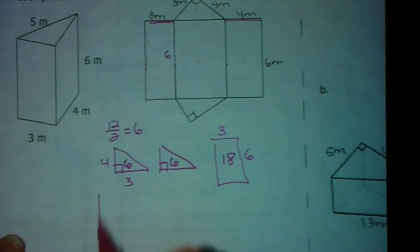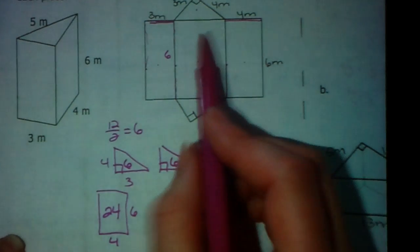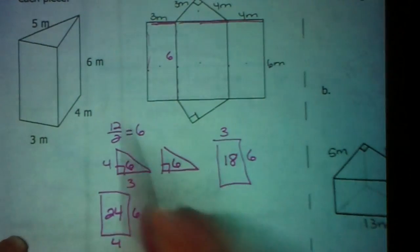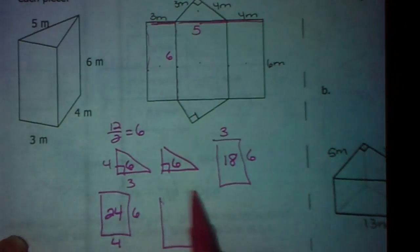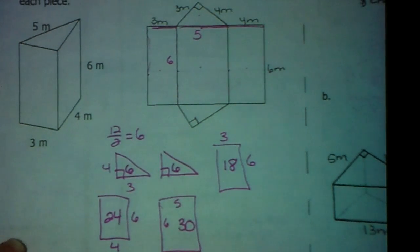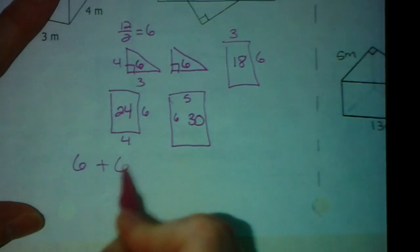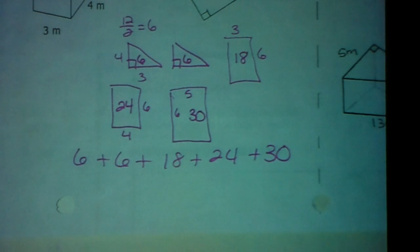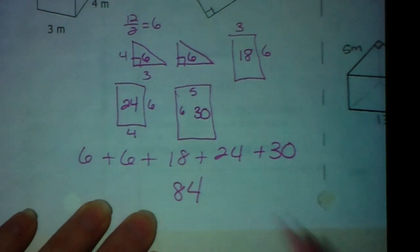Then there's the middle rectangle. We know one side is 6, and looking at the original shape, the other side is 5, so this rectangle is 6 by 5 with an area of 30. To find the overall surface area, add up all five areas: 6, 6, 18, 24, and 30. That gives an overall surface area of 84 meters squared.